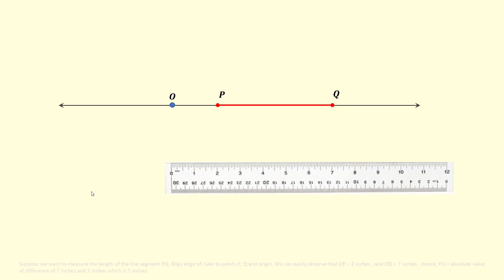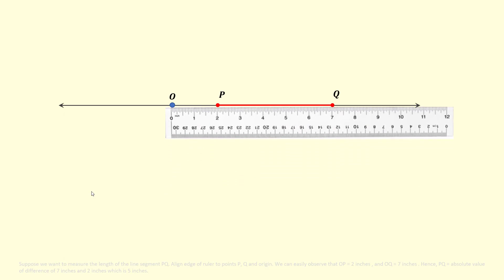Suppose we want to measure the length of the line segment PQ, align the edge of a ruler to points P, Q and origin. We can easily observe that OP equals 2 inches and OQ equals 7 inches.